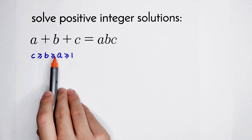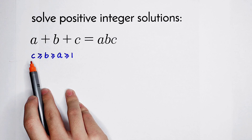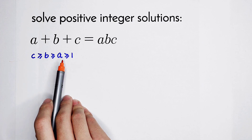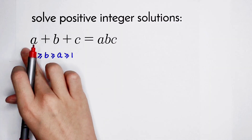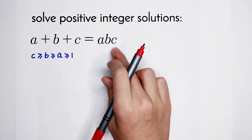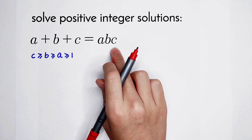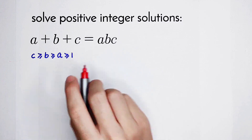You can also let A be the largest number, B the second, and C the smallest — they are all greater or equal to 1 because they are positive integers. The order can be chosen by you. And because A plus B plus C and ABC are both cyclic symmetry formulas...